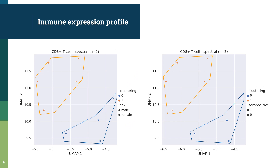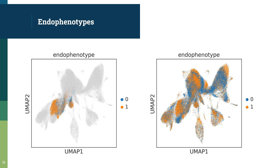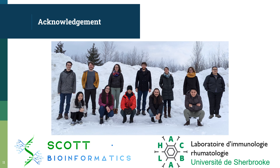Applying this method to CD8+ T cells, we obtain two distinct groups of patients sharing a similar immune expression profile. Those two groups are not fully explained by clinical data such as sex of patients or seropositivity to error markers. This leads us to believe that they may represent distinct immune endophenotypes. Having defined those two endophenotypes, we can then label all cells from each sample with their respective endophenotype and make further analysis comparing the cells of each endophenotype, for example comparing the distribution of specific gene expression. Thank you very much for listening, and I'll be happy to respond to any questions during the poster session. Have a nice day!